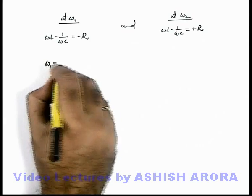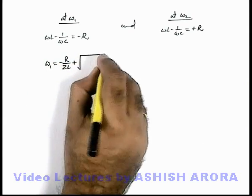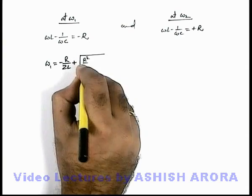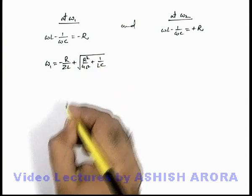Which we are getting here will be minus R by 2L plus root of R square by 4L square plus 1 by LC. This we are getting.